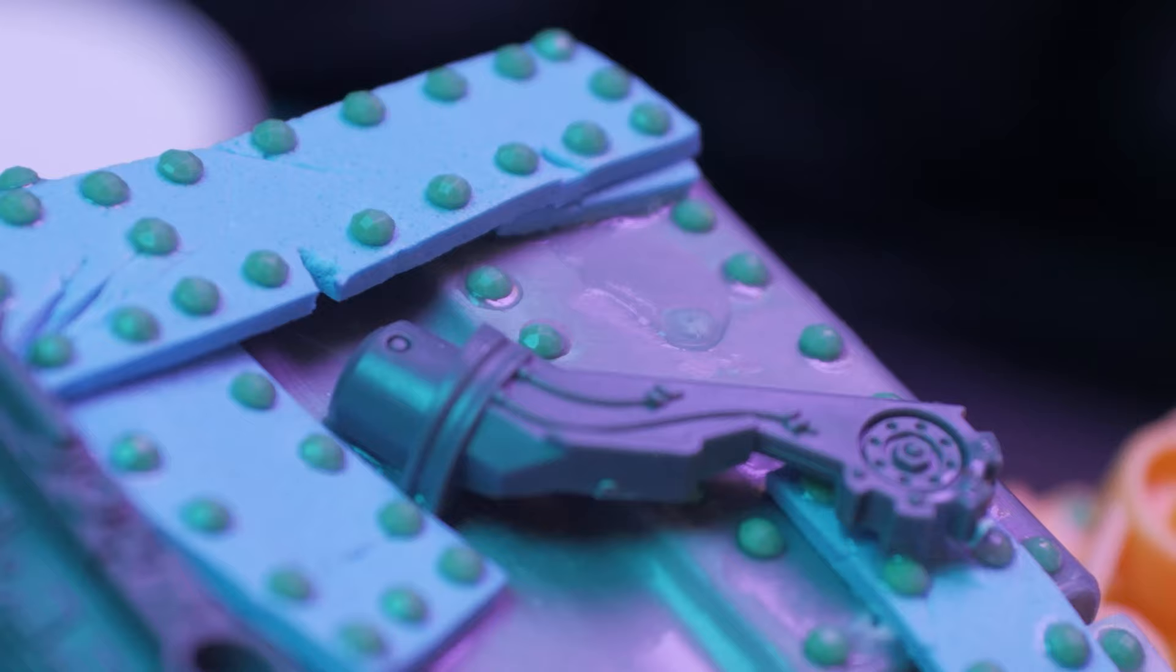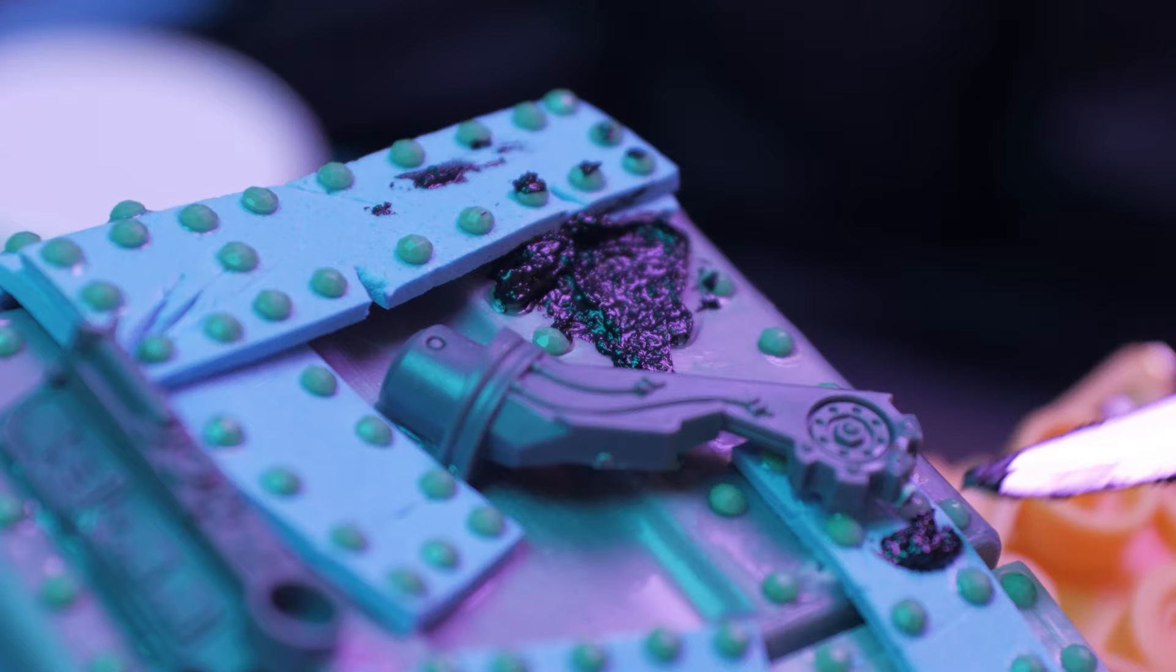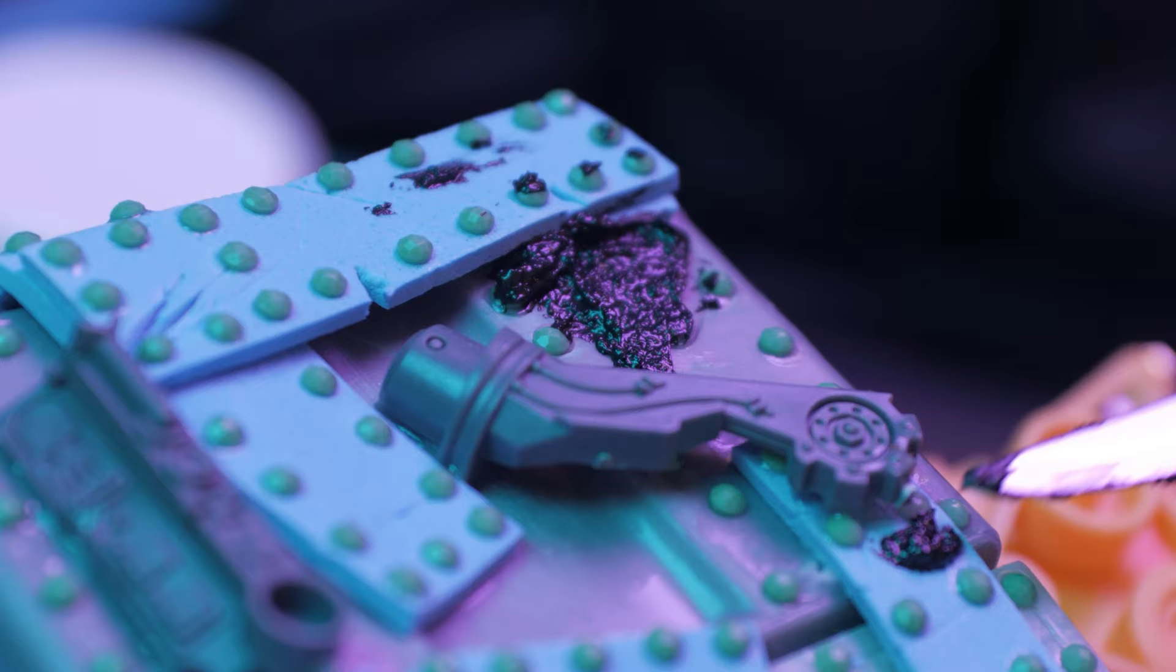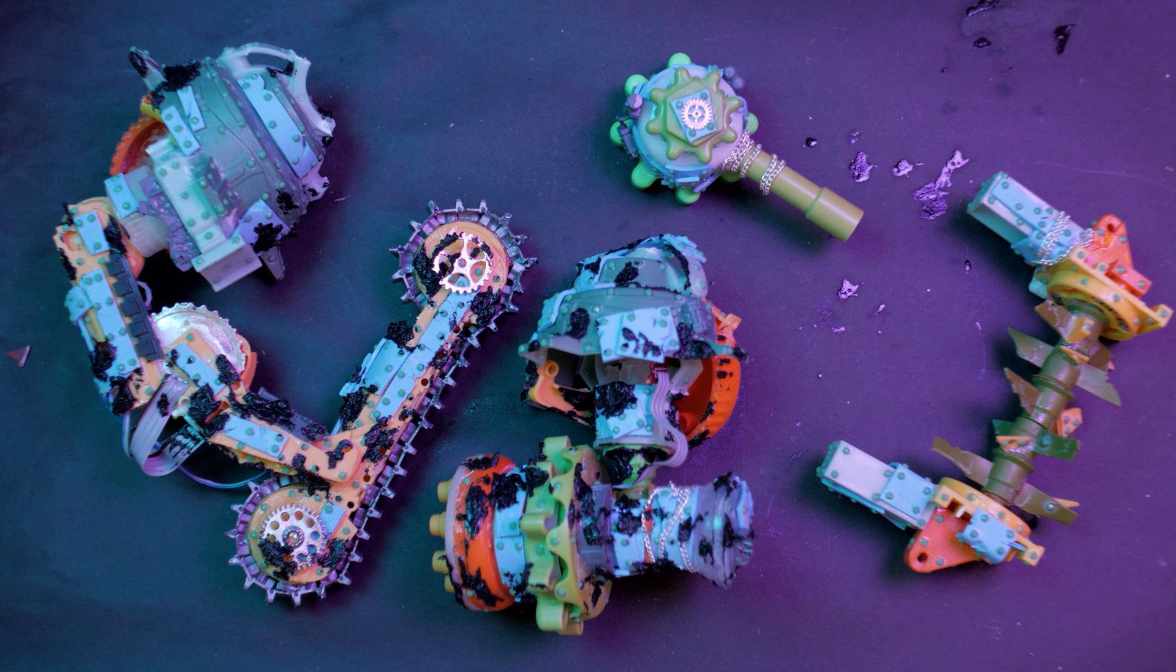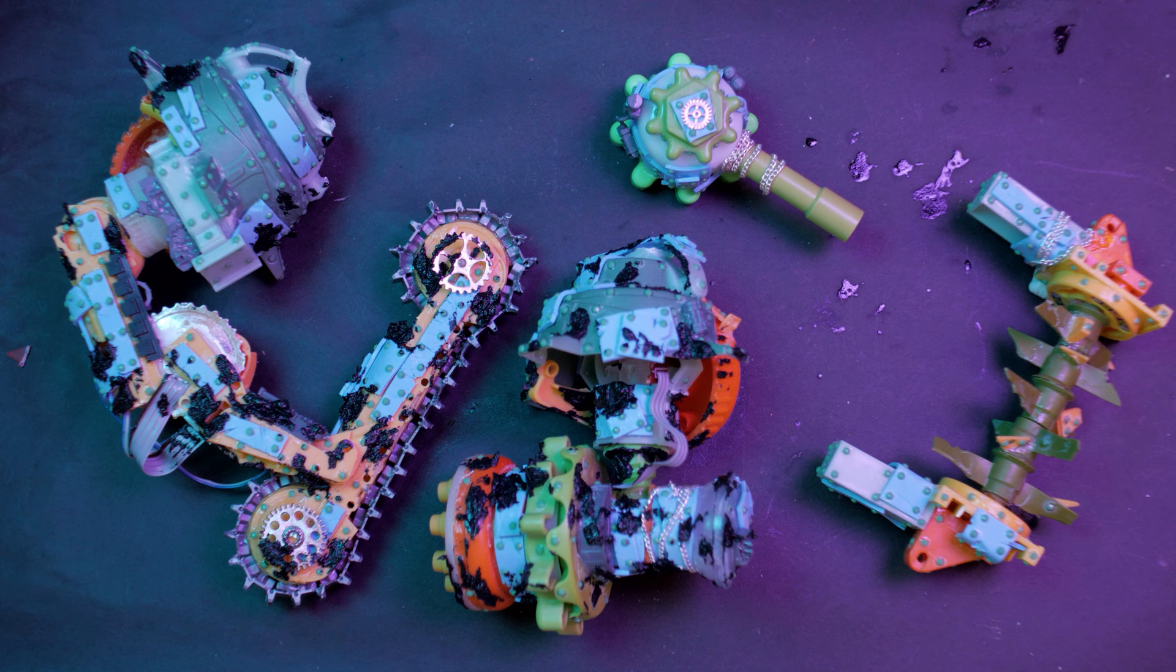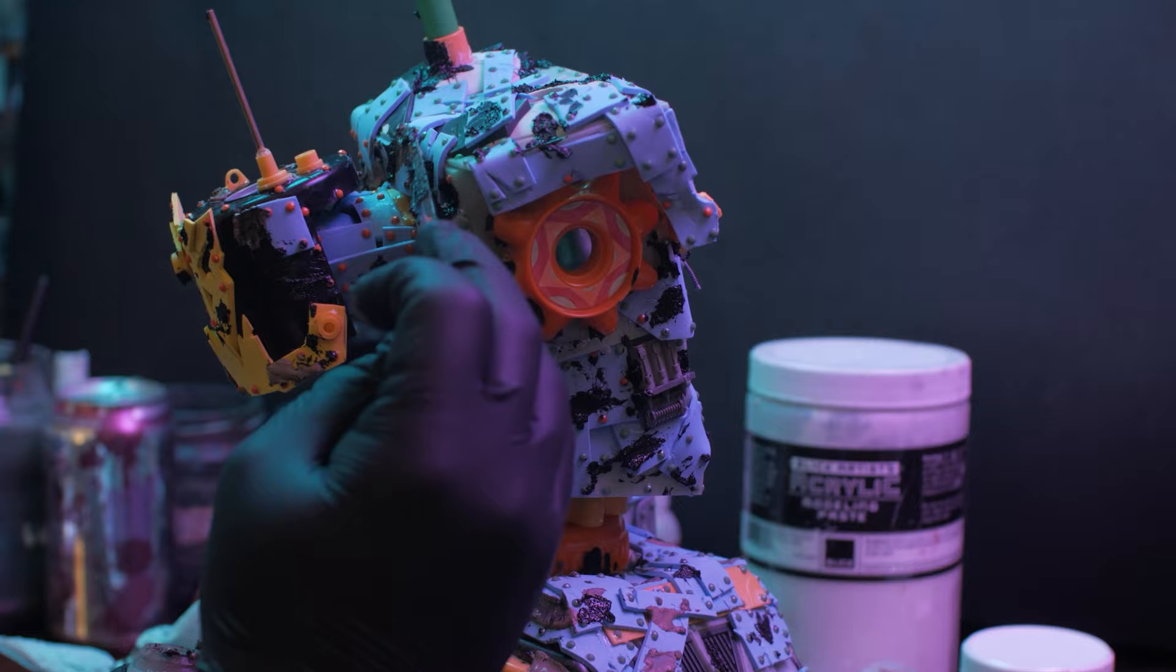The goop phase is one of my favorites. You basically just take out a bunch of textured paints and mediums and slather them all over the model. Some goops crackle, some goops crust, some goops dry like a big hunk of rust. It all looks pretty strange now, but once we start painting, we will really be able to accentuate all these nice textures we are laying down.